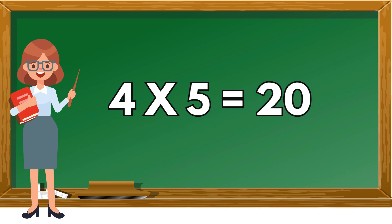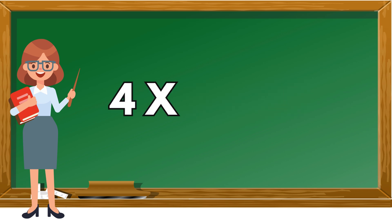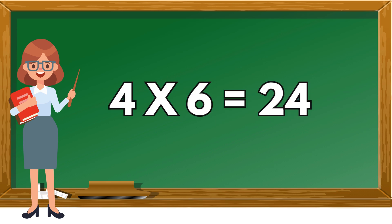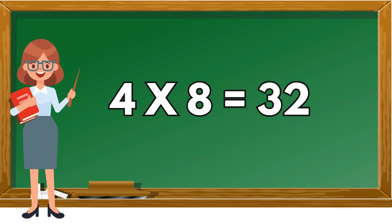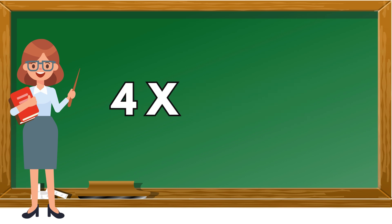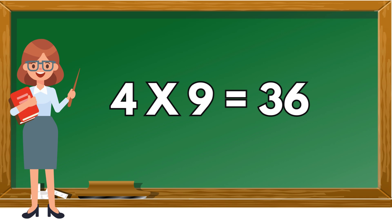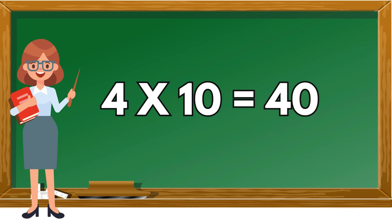Four fives are twenty. Four sixes are twenty-four. Four sevens are twenty-eight. Four eights are thirty-two. Four nines are thirty-six. Four tens are forty.